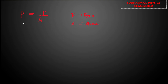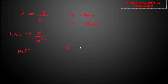Now, what is the unit of pressure? Force is expressed in Newton and area is expressed in meter square, so the unit of pressure from this equation is Newton per meter square — sometimes written as Newton meter raised to minus 2. The SI unit of pressure is Pascal, represented by Pa. One Pascal equals one Newton per meter square.